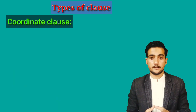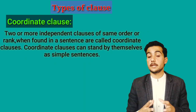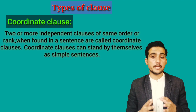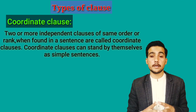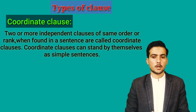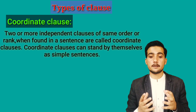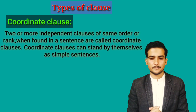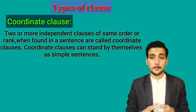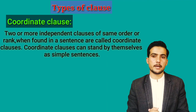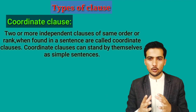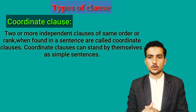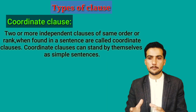Coordinate clause: two or more independent clauses of the same order or rank, when found in a sentence, are called coordinate clauses. Coordinate clauses can stand by themselves as simple sentences. So coordinate clauses consist of two or more independent clauses of the same rank.